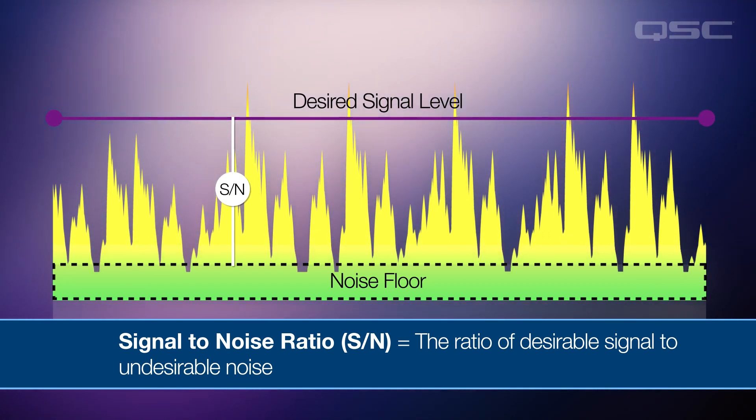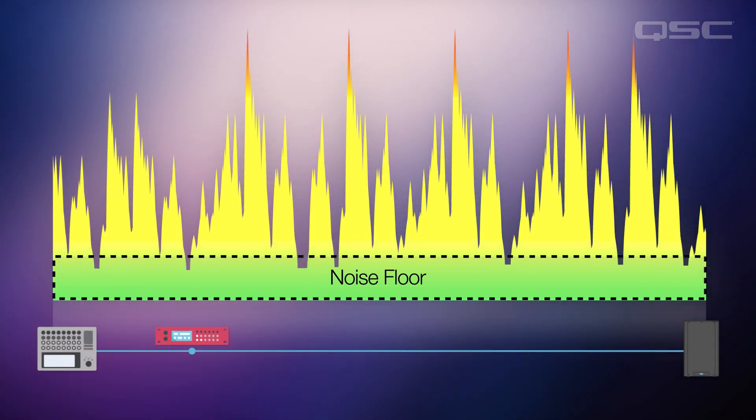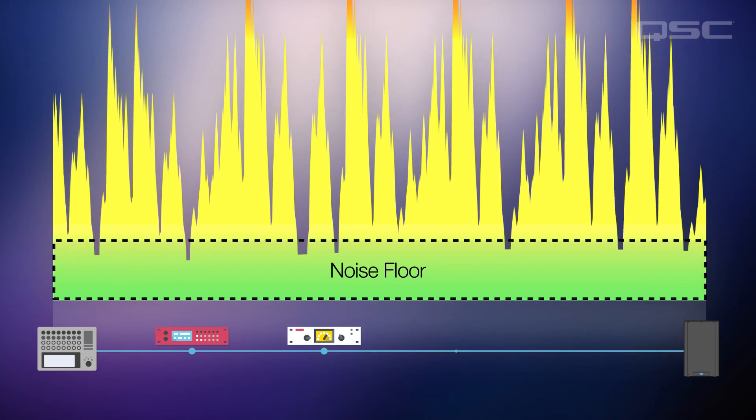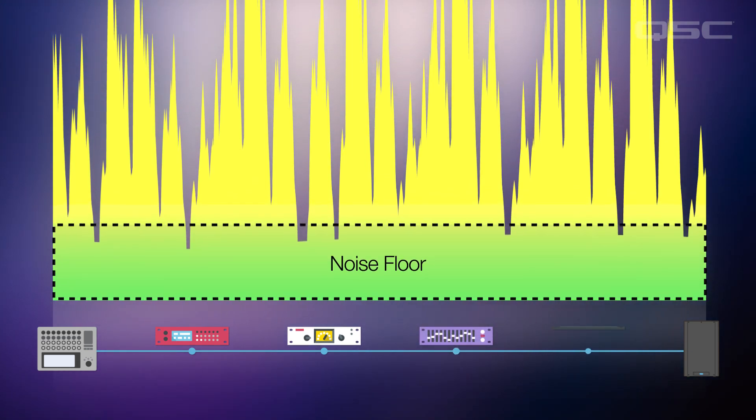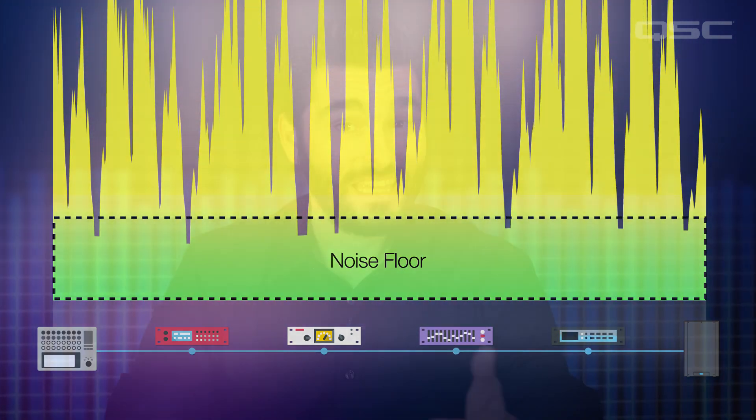The noise floor for any specific component is fixed. As you add pieces of gear to the system, the noise floor of each device compounds and the overall noise floor for the entire system increases. Even if every stage has an excellent signal-to-noise ratio on its own, when you chain multiple stages together, the noise of each of them is added together and the overall signal-to-noise ratio of the system will decrease. So the more devices you have in your system and the more inputs you have coming into the mixer, the more important it is to set the gain structure correctly.